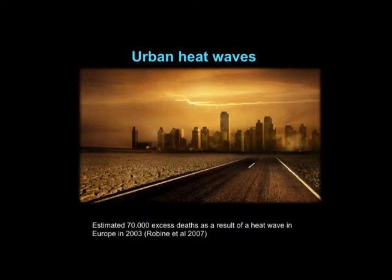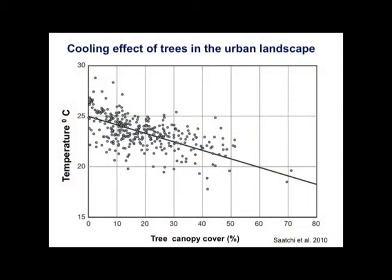For the future of urban landscapes, we need to think hard about building strategies to address climate change. One of the most important is addressing urban heat waves, which we have already experienced in Europe. In 2003, a major heat wave caused an estimated 70,000 excess deaths across Europe. It is well known that trees have a cooling effect in urban landscapes, and many cities are exploring how tree planting can be part of climate adaptation — reducing heat wave risk and also reducing flooding and precipitation peaks.